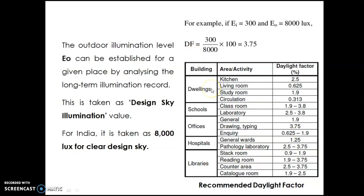This is a small example of how to consider the daylight factors, and we are given a list of daylight percentages for various typologies of buildings such as dwellings, schools, offices, hospitals, and libraries. The lighting levels for spaces or activities such as kitchens, laboratories, and counter areas where you need to concentrate require a lot of lighting to work efficiently. Spaces such as circulation spaces or stacking areas require comparatively very little amount of daylighting. This has to be considered before designing your building.